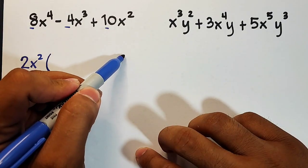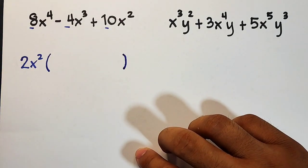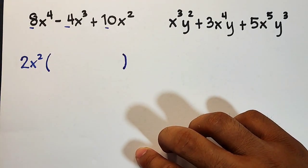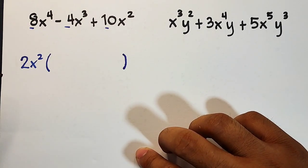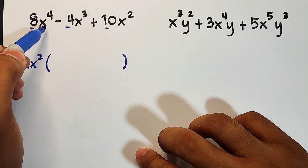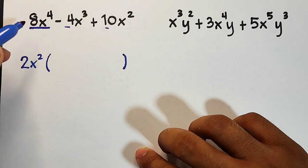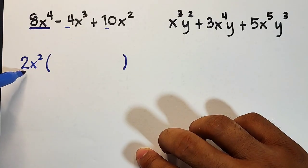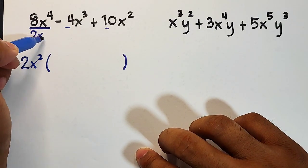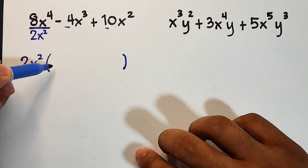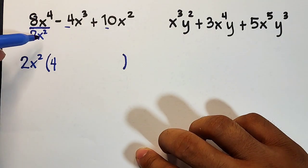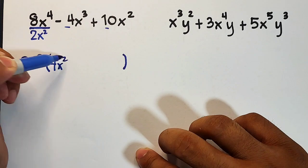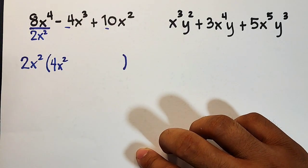Now for the other factor in parentheses. Since we have 3 terms, we'll have three terms in our second factor. To get them, divide all these terms by your greatest common factor, which is 2x². We have 2x². Now 8 divided by 2 is 4. x⁴ divided by x² is x² - subtract the exponents, 4 minus 2 is 2.